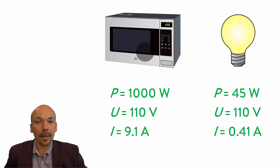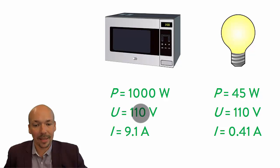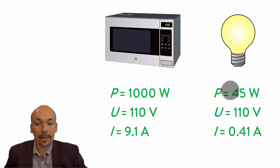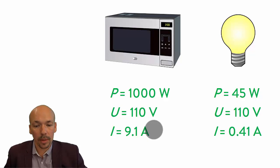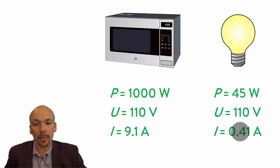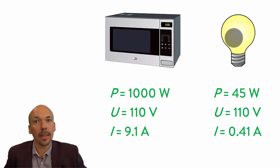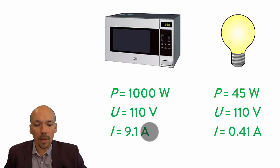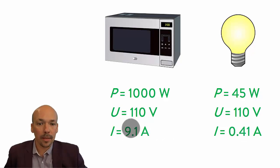As you can see, if they both use the same power source of 110 volts, then they use different amounts of current. The microwave uses 9.1 ampere because it needs a lot of energy, and the light bulb only 0.41 because it doesn't need that much — and if it got that much energy, it would probably break. The amount of current they use has to do with their resistance. They both have a resistance to the current.